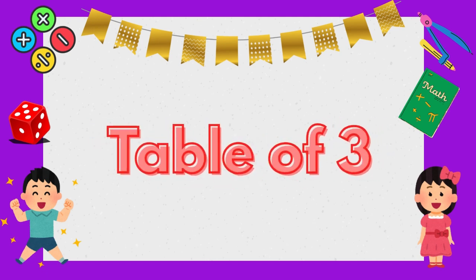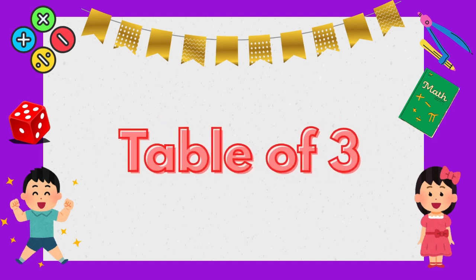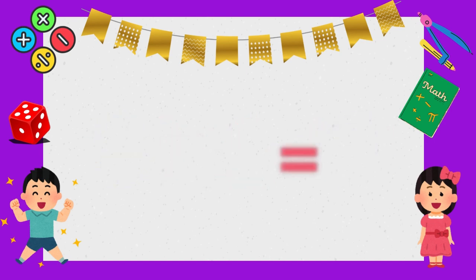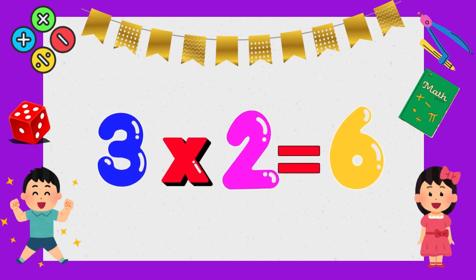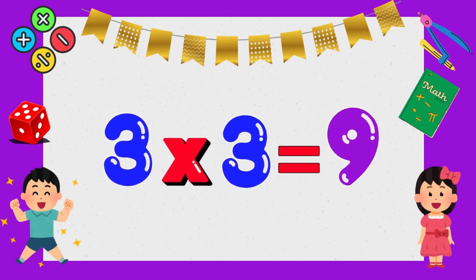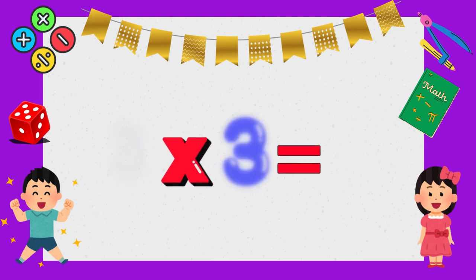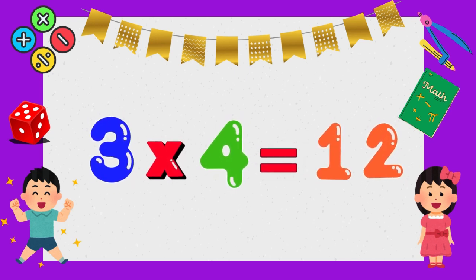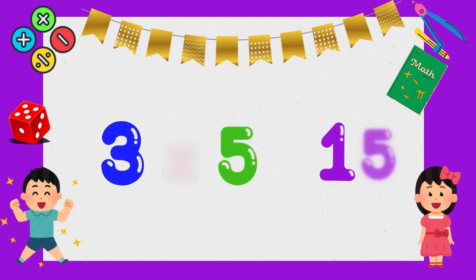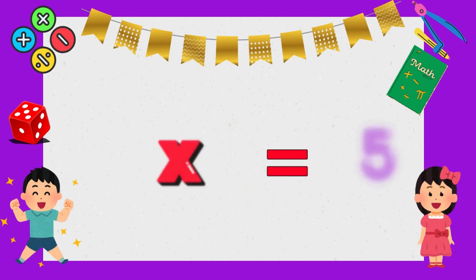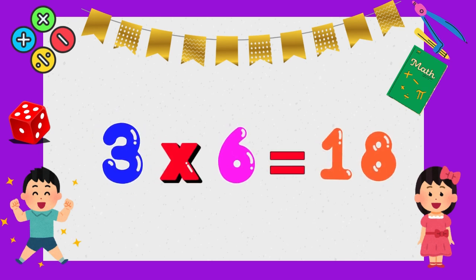Let's learn. Table of three. Three times one is three. Three times two is six. Three times three is nine. Three times four is 12. Three times five is 15. Three times six is eighteen.